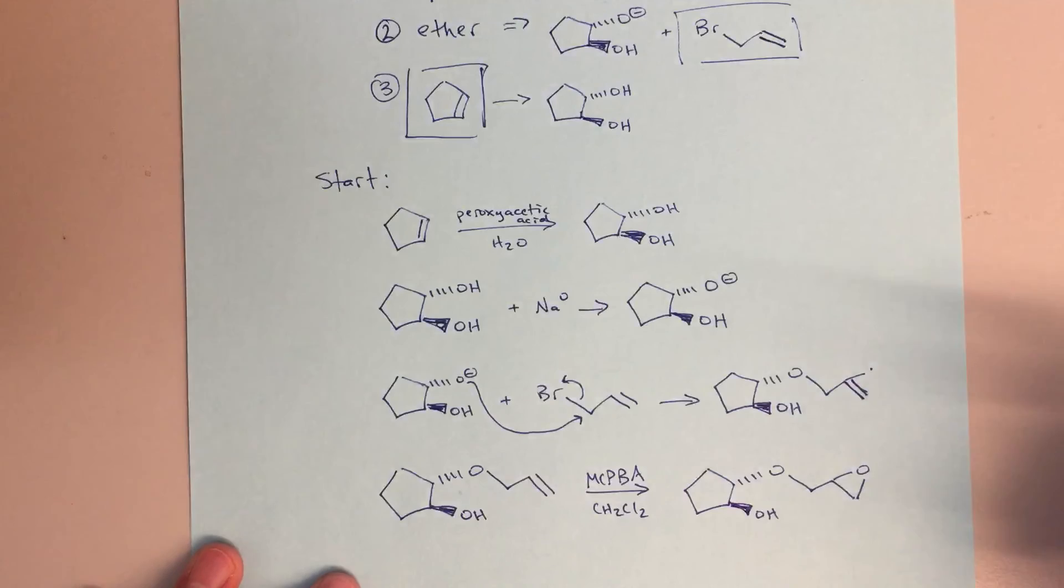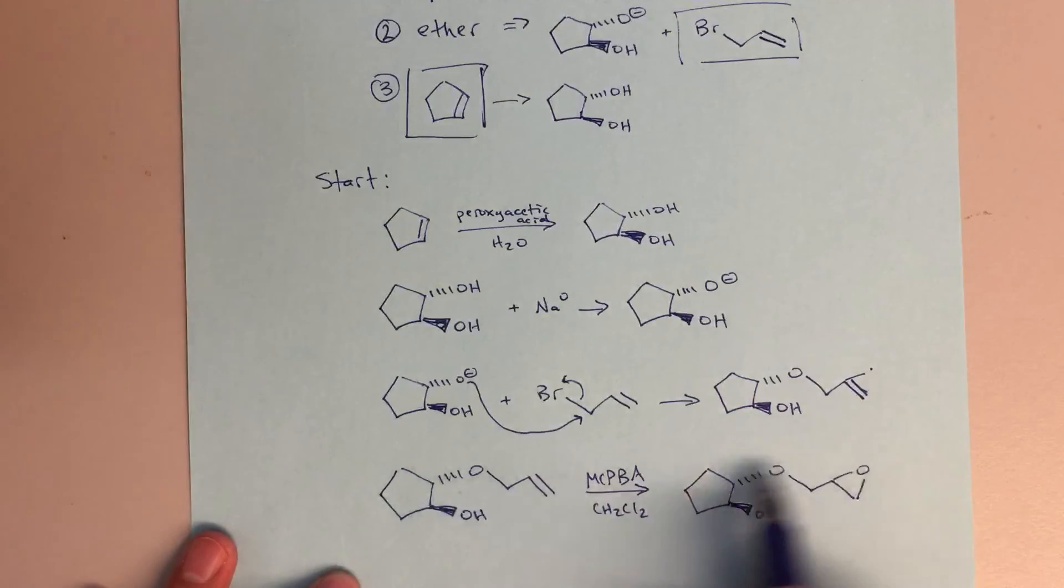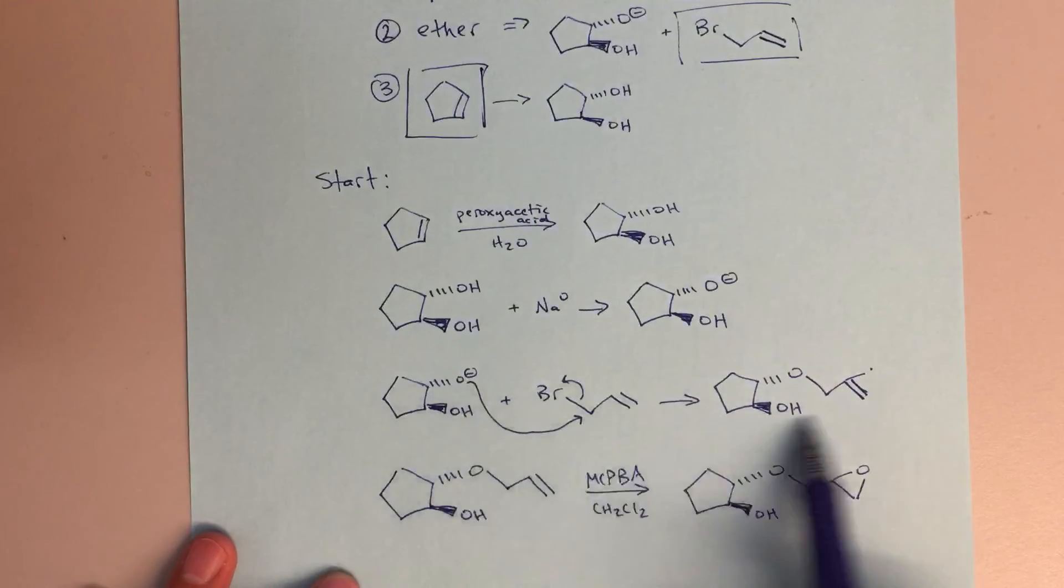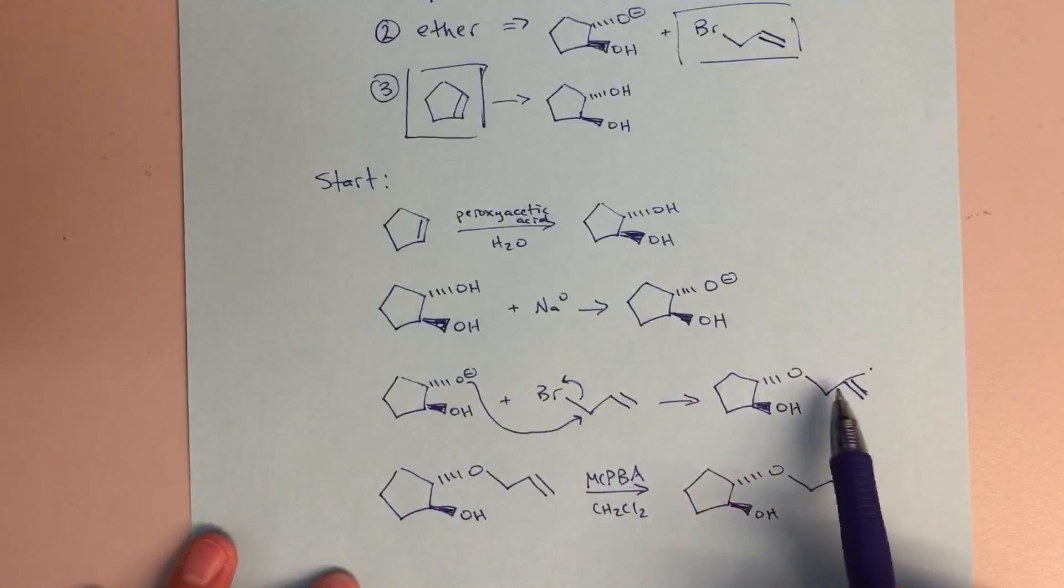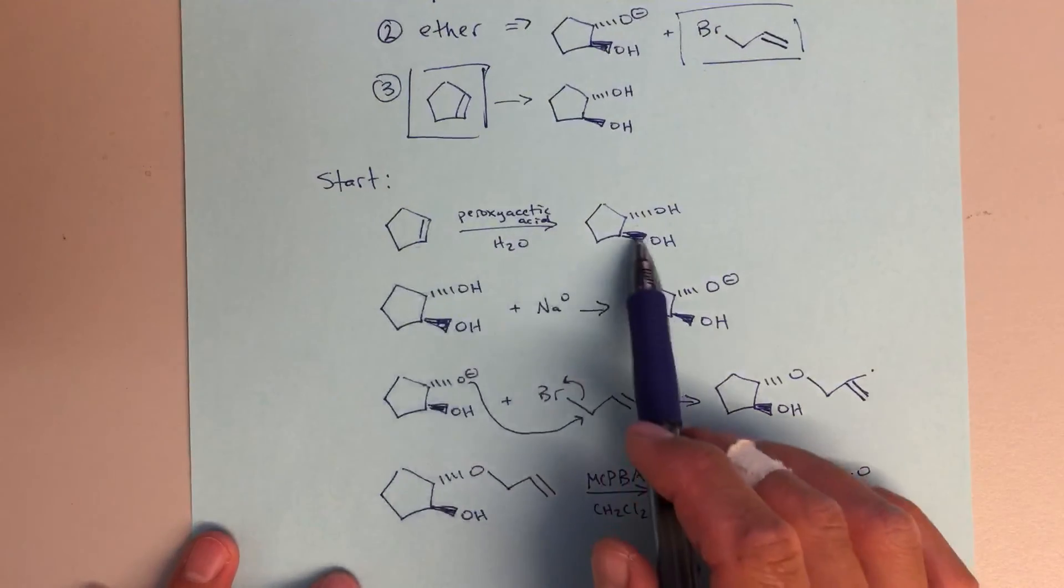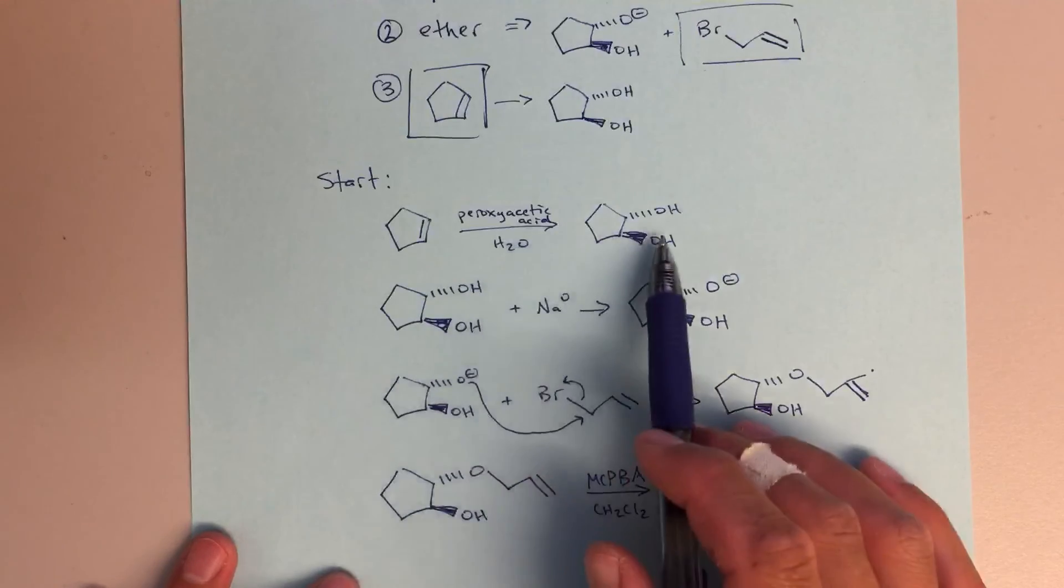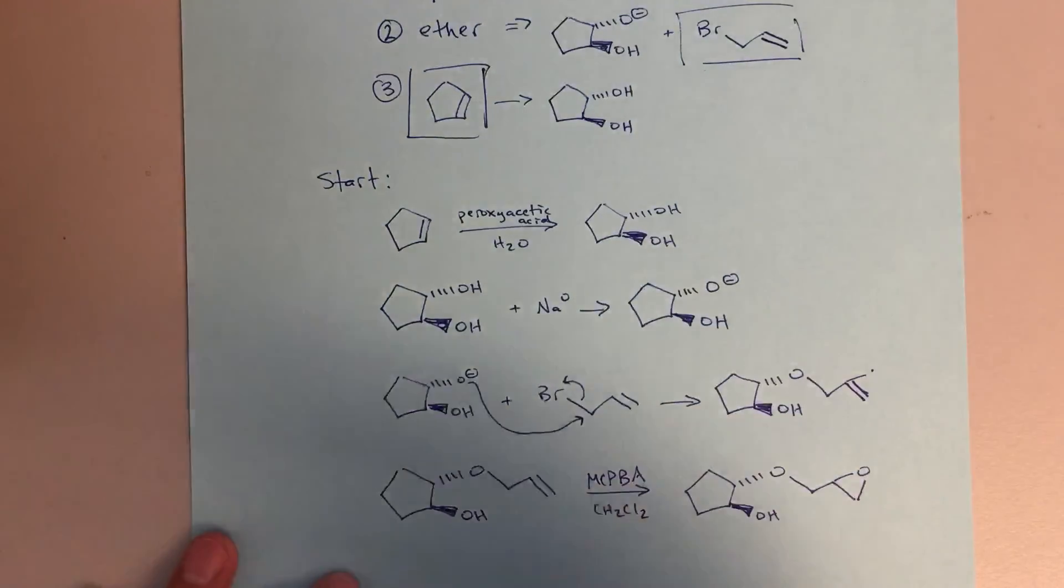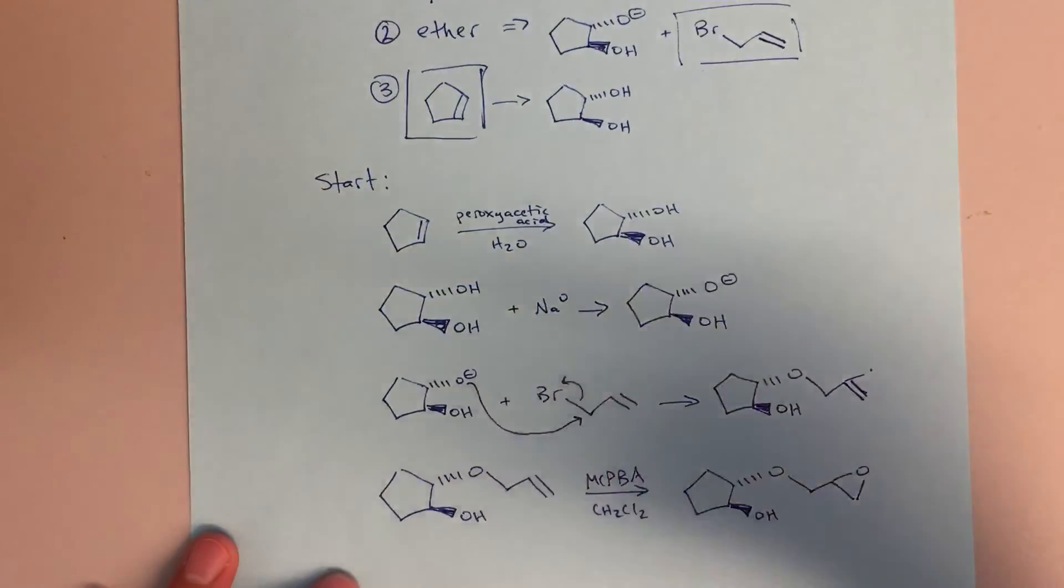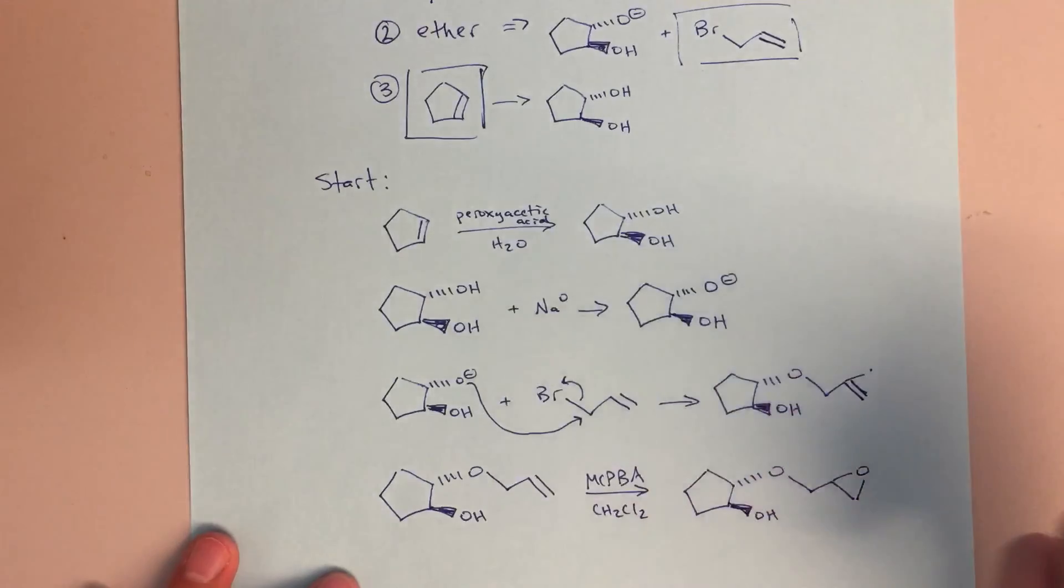The keys here I would say: this bottom step, we definitely need to be comfortable with that. This SN2 reaction here, again, definitely we should be comfortable with making ethers. Forming this trans diol using peroxyacetic acid and water, that's again very important. We need to be able to be comfortable with that as well. This would be my strategy of how to go through this problem, and I hope that helps.